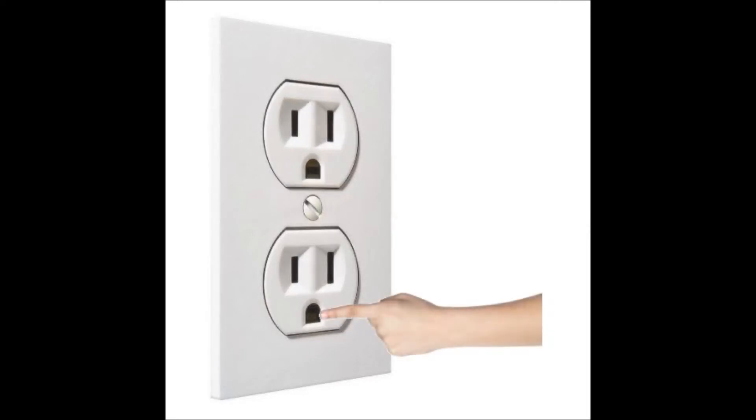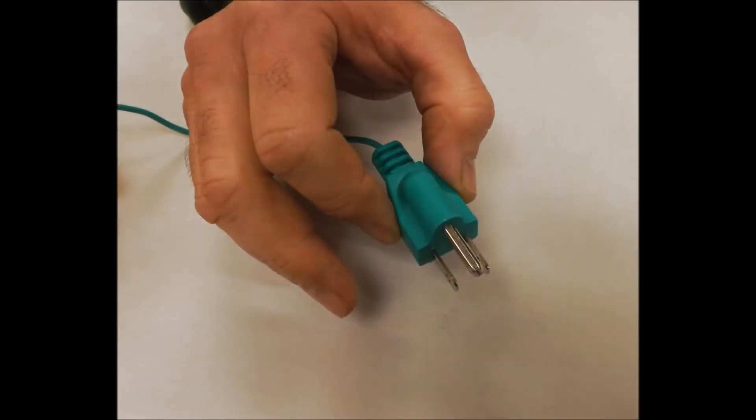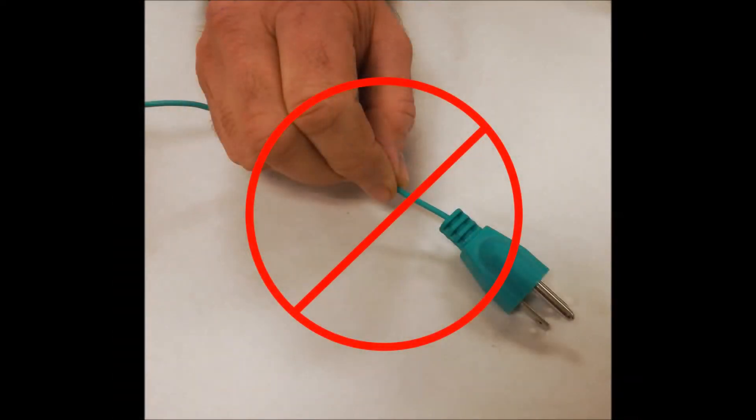Make sure the round metal prong of the plug goes into the round hole of the outlet. Handle the plug by the bulky head. Do not pull on the wire itself, as this may dislodge the wire from the plug.